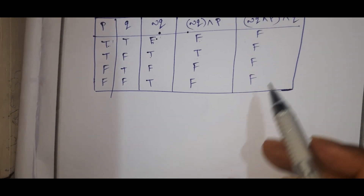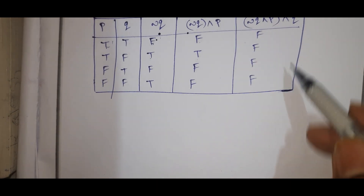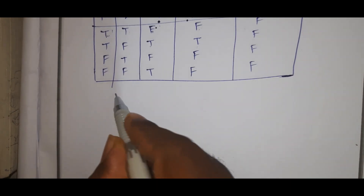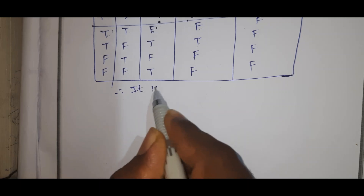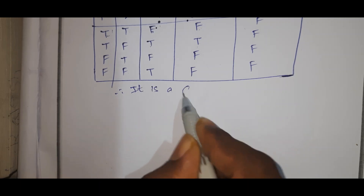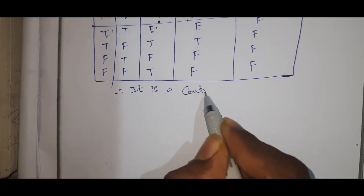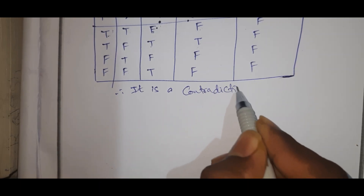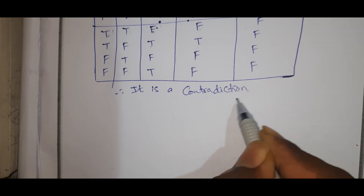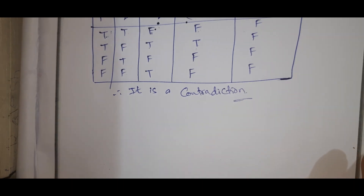All the values in the final column are false. Therefore, it is a contradiction. This is a contradiction.